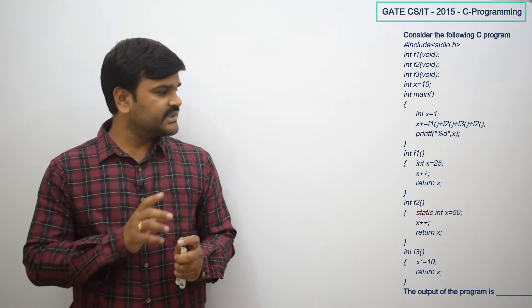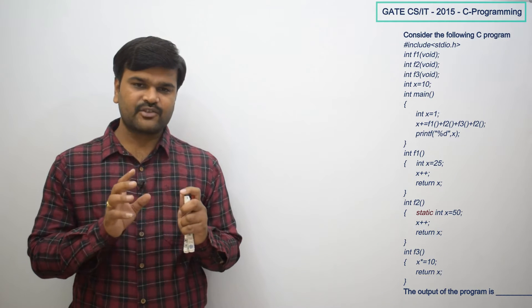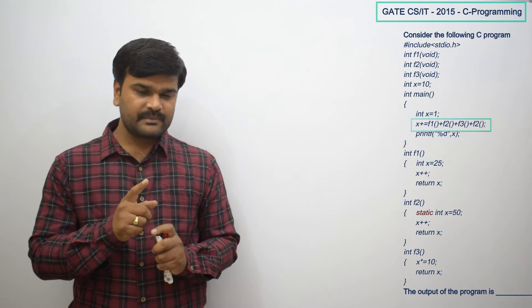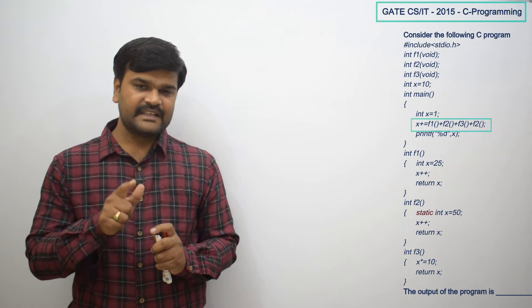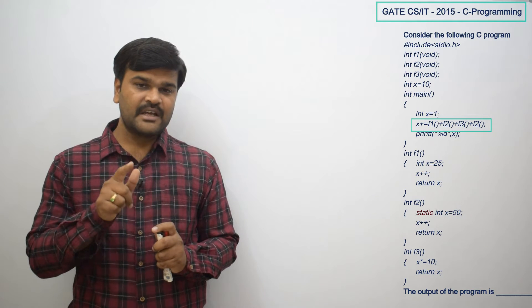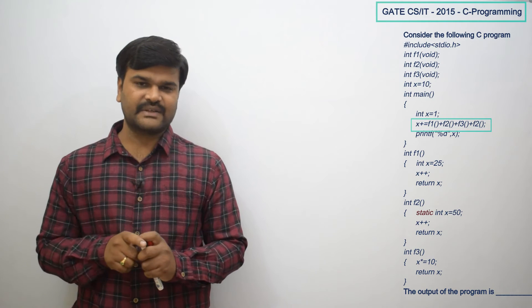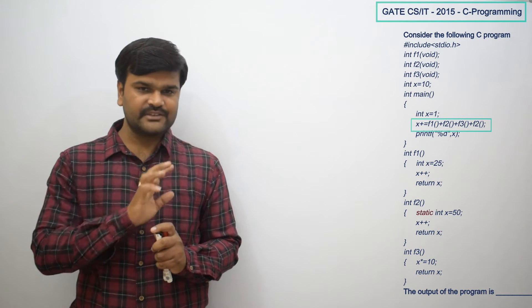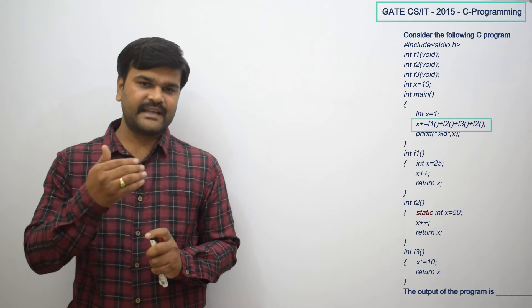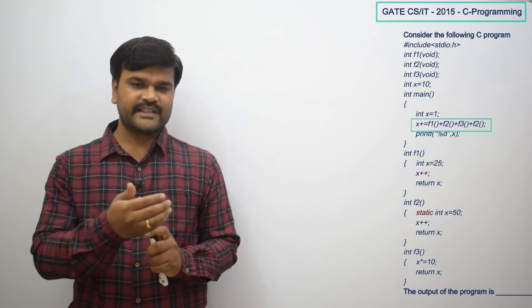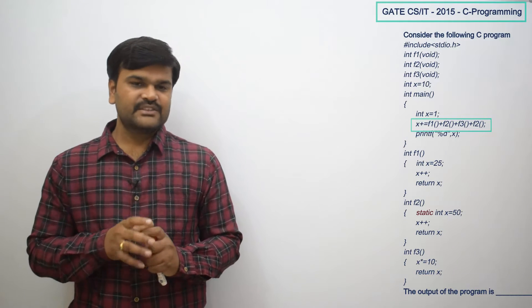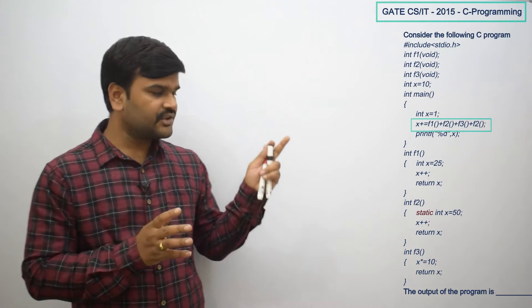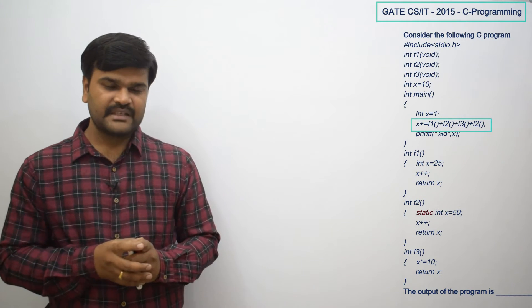Here, if you observe mainly, we have to get the clarity first of all. Here, x plus equal to f1 function call plus f2 function call plus f3 function call plus f2 again function call. So what these functions are returning, those values we will replace in those positions. And then finally, we are going to print the x value. These functions f1, f2, f3 — their code and body is also there.